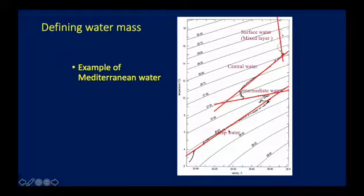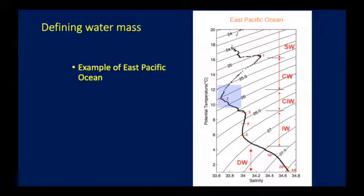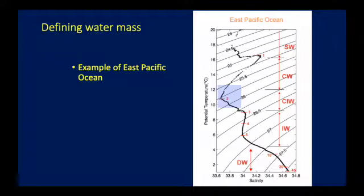After intermediate water, you have deep water and then bottom water. This is how scientists define these types of water masses — surface, central, intermediate, deep, and bottom waters. So you have five water masses in the Mediterranean Sea. In the East Pacific Ocean, you similarly have surface mixed water, central water, intermediate water, and deep water. In areas deeper than about 5000 meters, you will typically also have a bottom water layer.